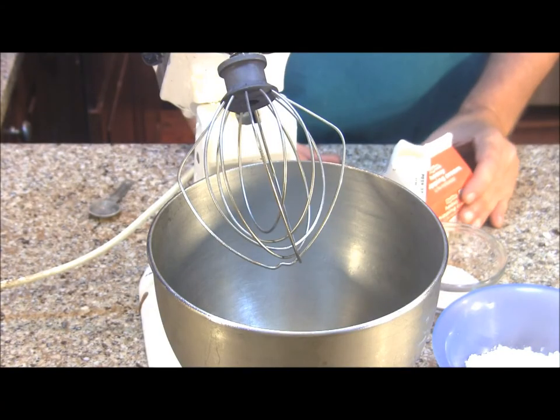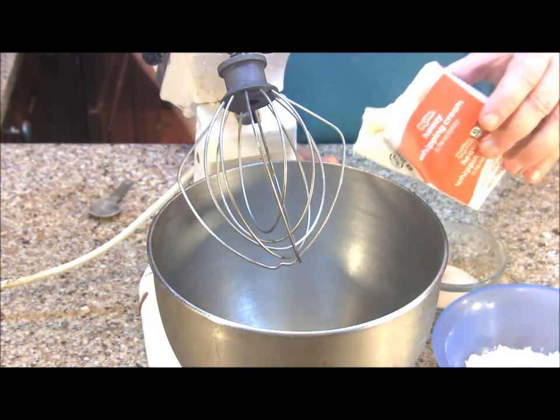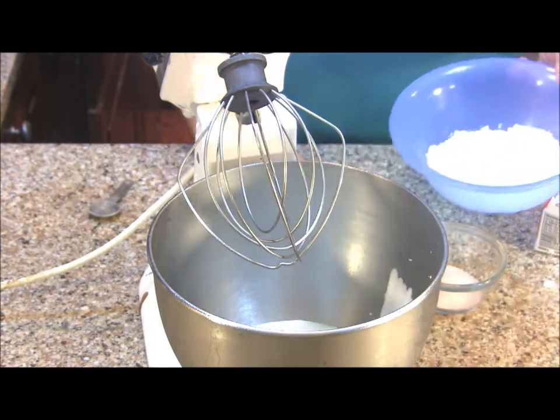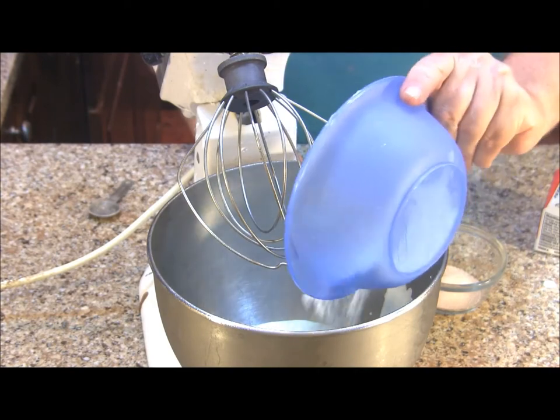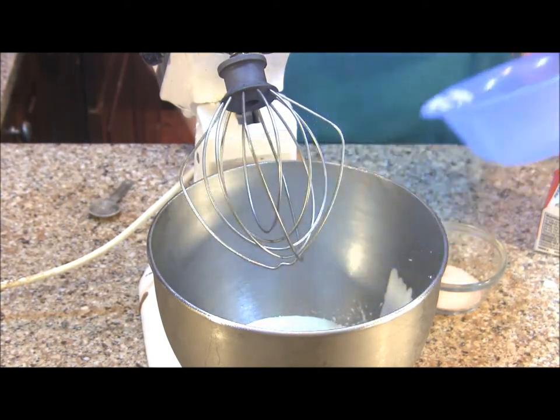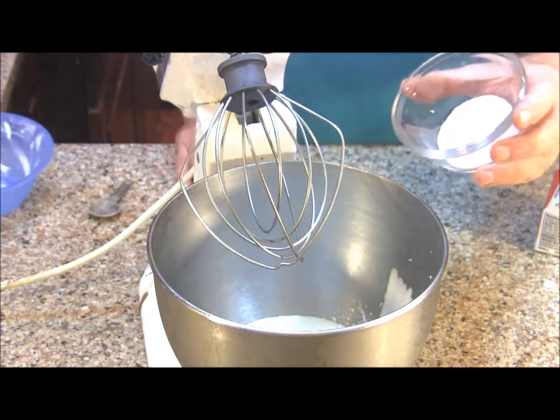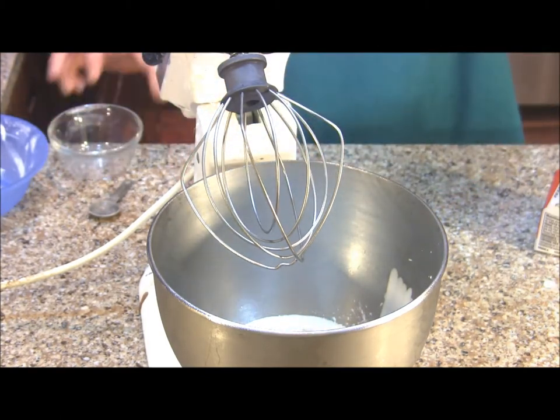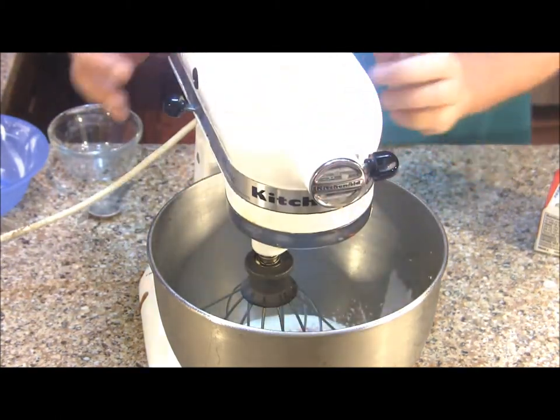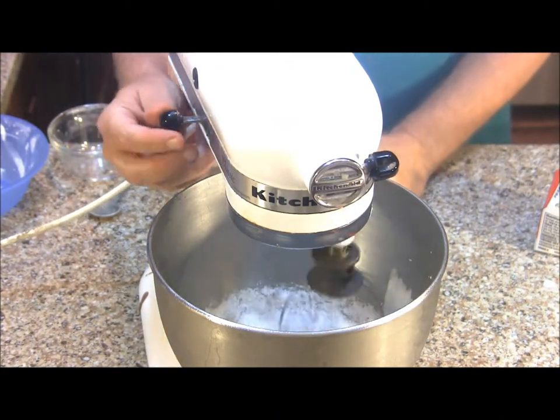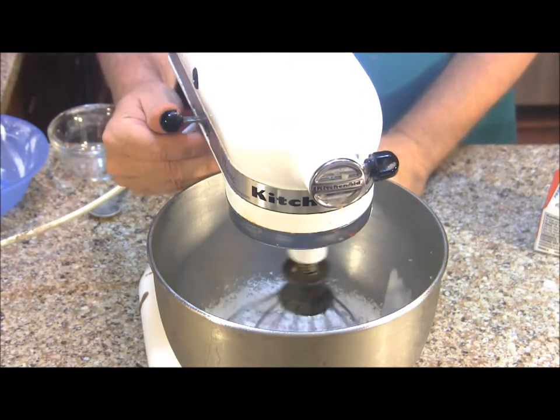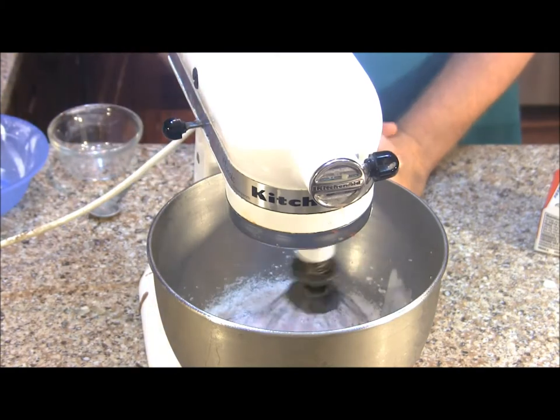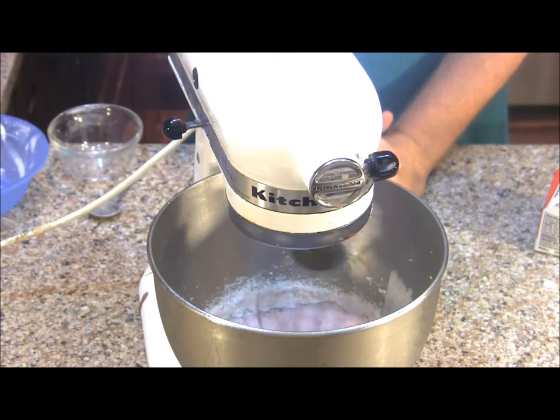To my stand mixer I'm going to add my one cup of heavy whipping cream, one quarter cup of powdered sugar, and two tablespoons of my strawberry jello. And now we're just going to whip this until it's light and airy, probably about four to five minutes.